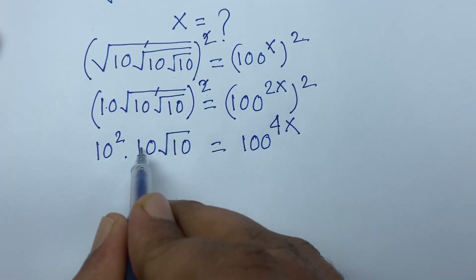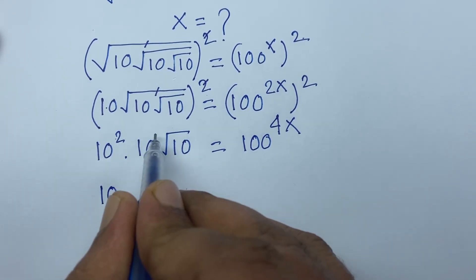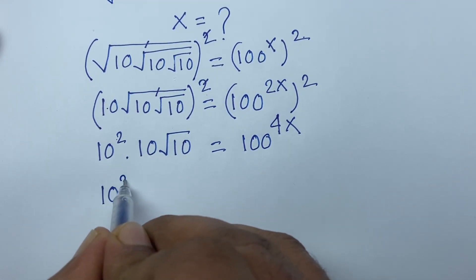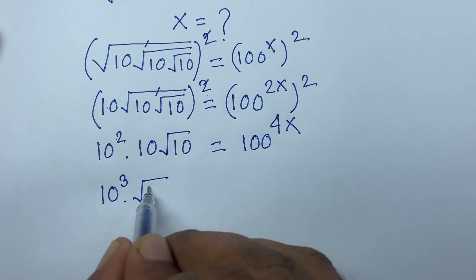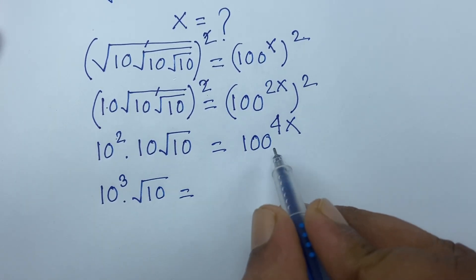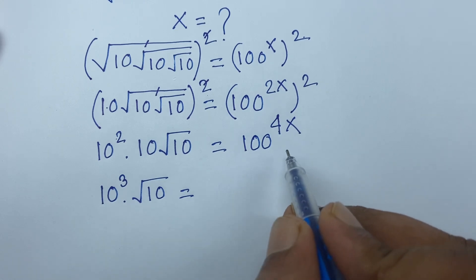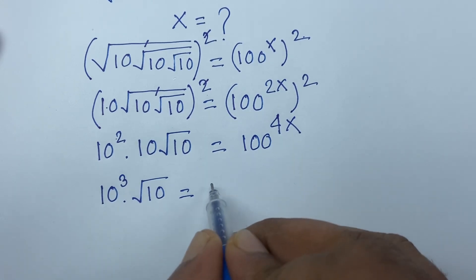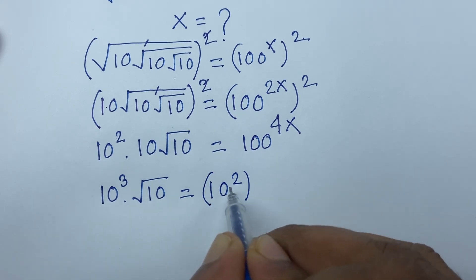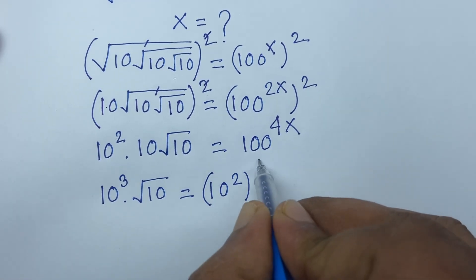At this moment I can see 10 to the power 2 and here is 10, so it will be 10 to the power 3 — because 1 plus 2 is 3 — times square root of 10 is equal to 100 to the power 4x. And 100 is 10 to the power 2, so the right side becomes 10 to the power 8x.